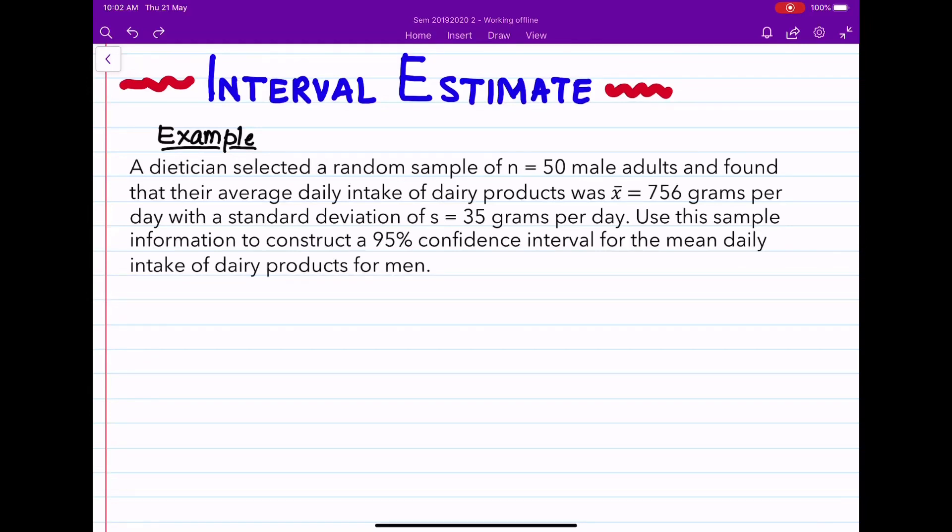This is an example of the topic interval estimate. In this example, a dietitian selected a random sample of n equals 50 male adults and found that their average daily intake of dairy products was 756 grams per day with a standard deviation of 35 grams per day. We have to use this sample information to construct a 95% confidence interval.